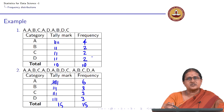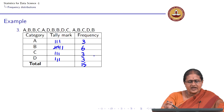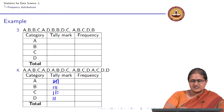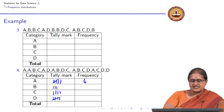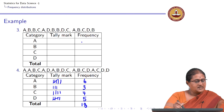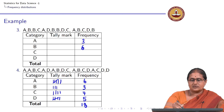Now let us look at a final example with more observations. Going through the tally marks: A, A, B, C, A, D, A, B, D, C, A, B, C, D, A, C, D, D. Counting the tallies: A has 6, B has 3, C has 4, and D has 5, giving a total of 18 observations.